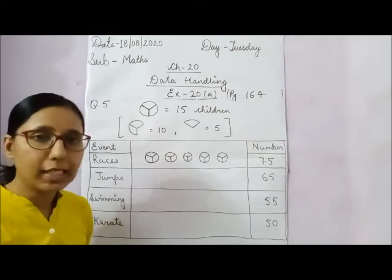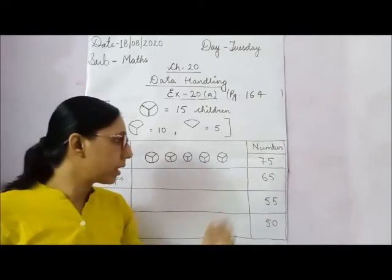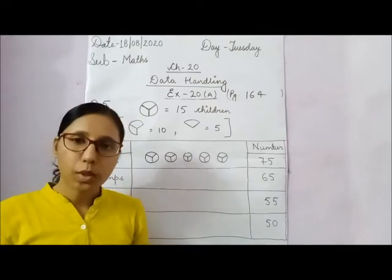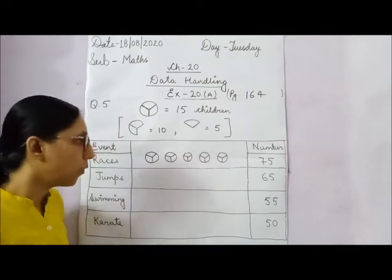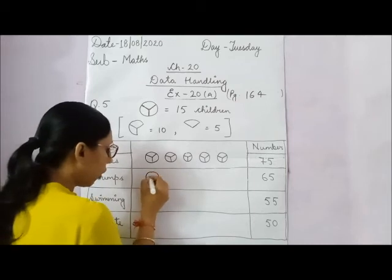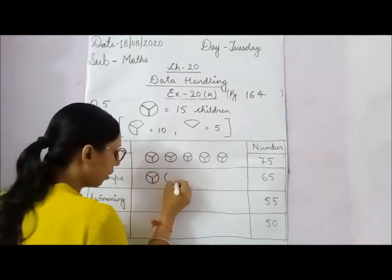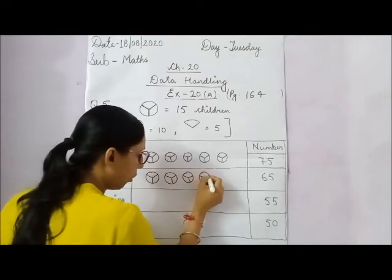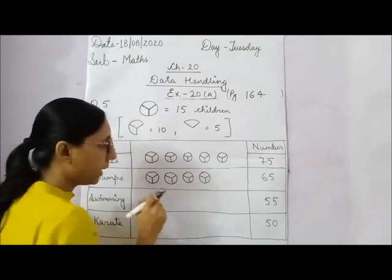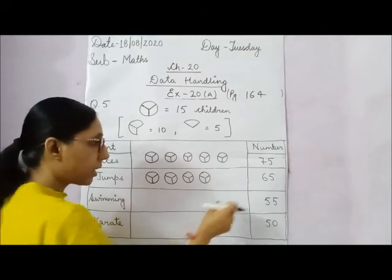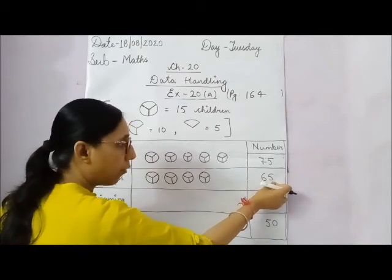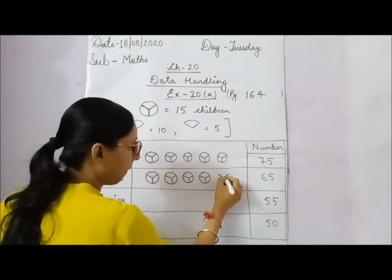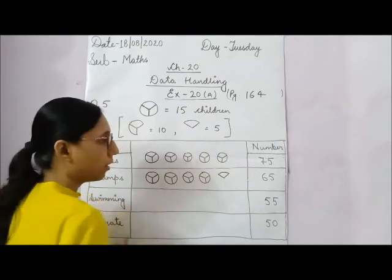For jumps, there are 65 students. 15 times 4 is 60, so first make 4 complete pictures showing 60 students. Then for the remaining 5, use the partial picture showing 5 children. This makes 65 total.